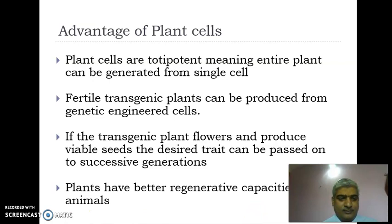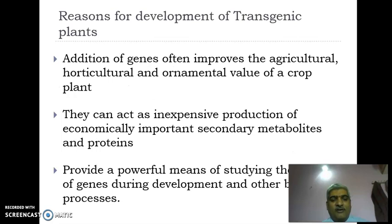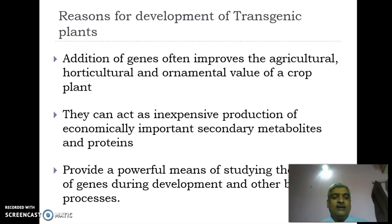A variety of strains are available from conventional plant breeding. Plants produce a large number of progeny, and rare mutations and recombinations can be found easily. Species boundaries and compatibility are not an issue with advances in molecular biology techniques for plant improvement. Genetically determined traits can be introduced as either a single gene or a cluster of genes. Addition of selected desirable genes improves agricultural, horticultural, and ornamental value of crop plants or medicinal plants, and they can act as an inexpensive production system for various economically important secondary metabolites including proteins.